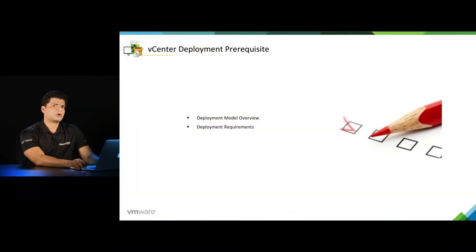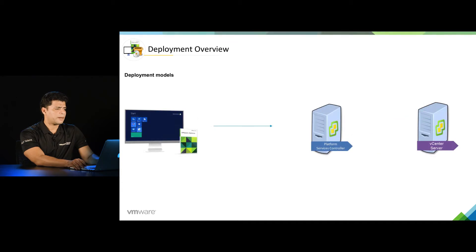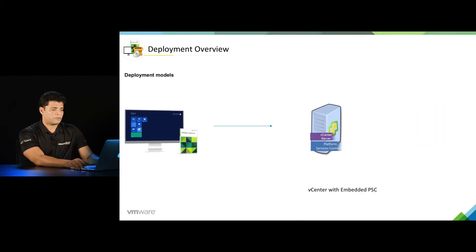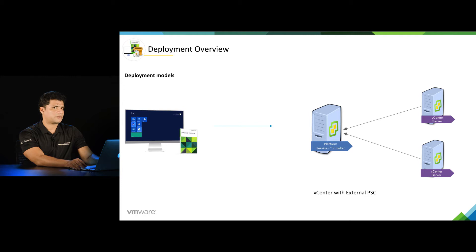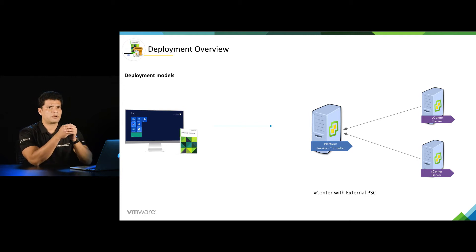When we talk about deployment models, we really have two types. One is vCenter with Embedded PSC, where vCenter and the Platform Services Controller will be running on the same machine. The second type is vCenter with External PSC, where the Platform Services Controller and the vCenter Server will run on different virtual machines.